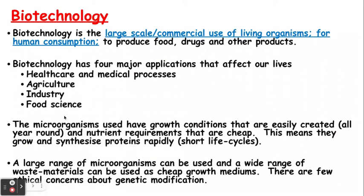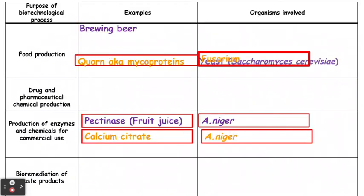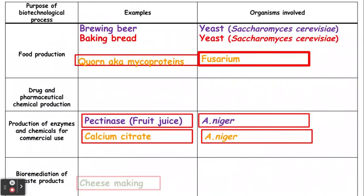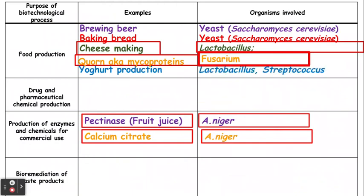For this spec point you do need to know some of the microorganisms used for particular purposes, shown in this table. The bits in the red boxes are taken directly from the mark schemes. In terms of food production, the main ones are cheese making, which uses the microorganism Lactobacillus, and quorn or mycoprotein, which uses Fusarium. We should already know that yeast is involved with making beer and bread.